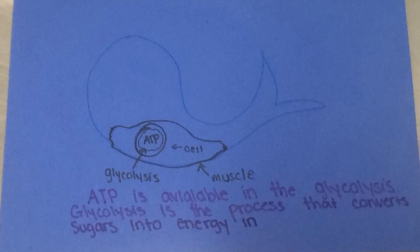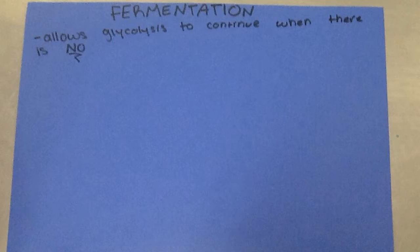ATP is available in glycolysis. Glycolysis is the process that converts sugars into energy and cellular respiration.